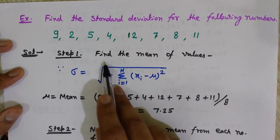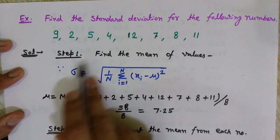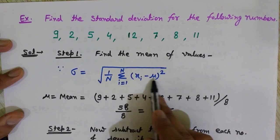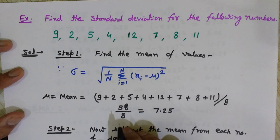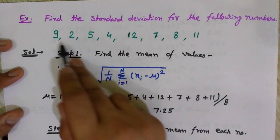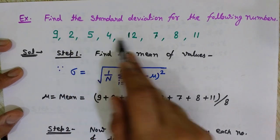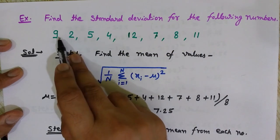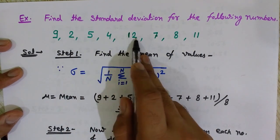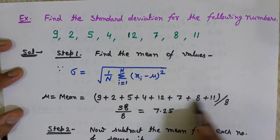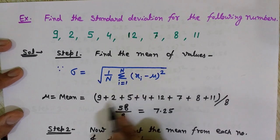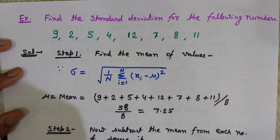Step one is to find the mean of the values. Mean is simply the average — we add all the numbers and divide by the number of values present in the set. There are 8 values, so we add all these numbers and divide by 8. We get 58 divided by 8, which equals 7.25. This is the first step — we now have the value of mu.